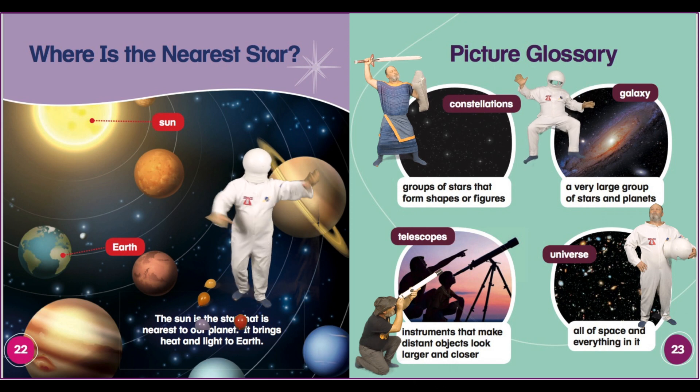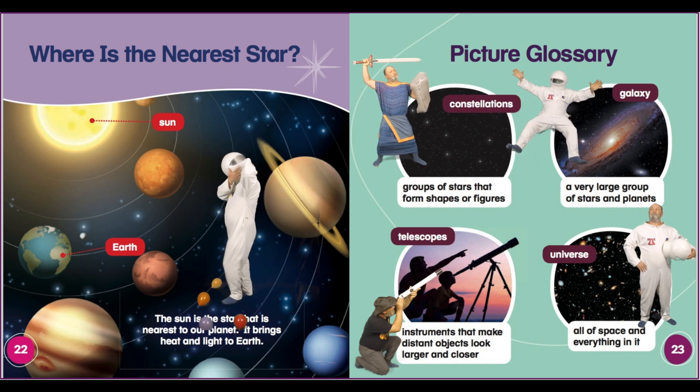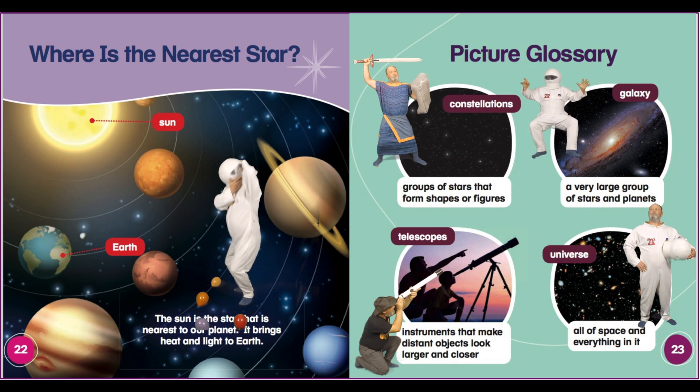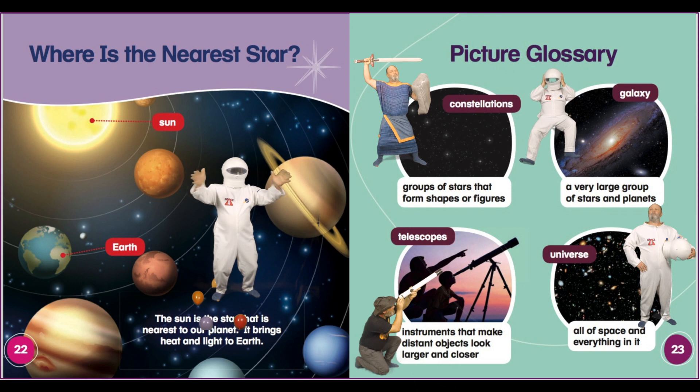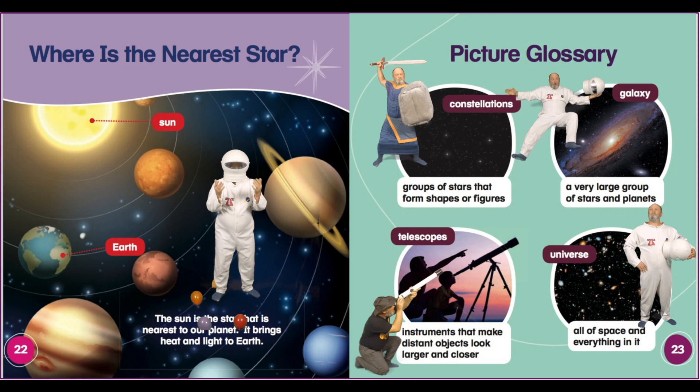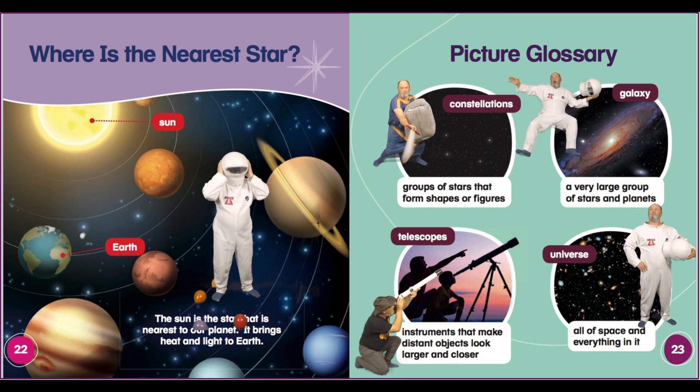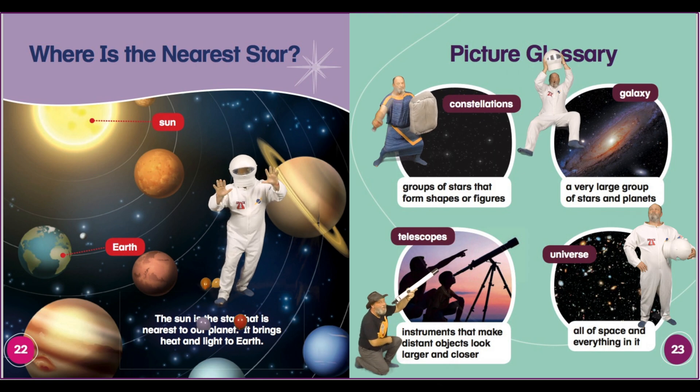Picture glossary. Constellations: Groups of stars that form shapes or figures. Galaxy: A very large group of stars and planets. Telescopes: Instruments that make distant objects look larger and closer. Universe: All of space and everything in it.